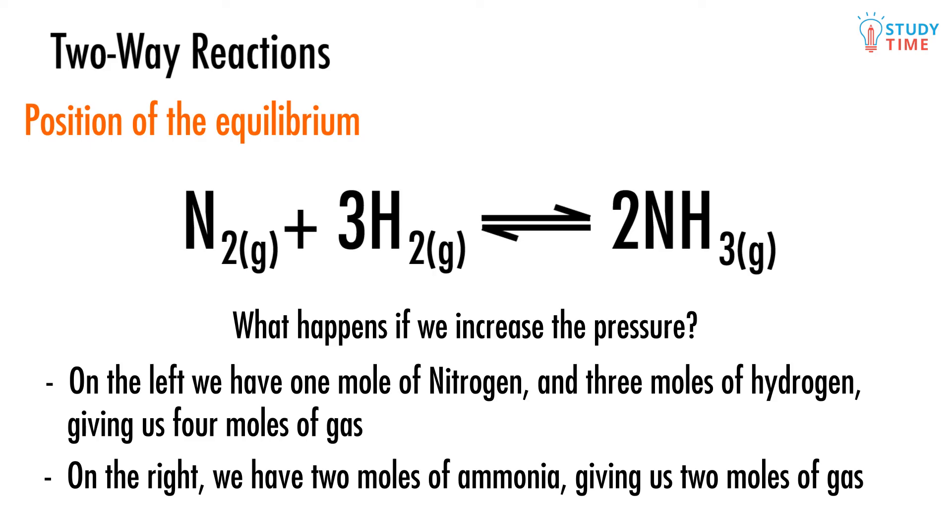When we increase the pressure of the system, a closed system you'll remember, the equilibrium will respond by desperately reducing the pressure, and it does this by favoring the side with the fewest moles of gas. Here that means moving to the right and favoring the forward reaction. More ammonia gets made.